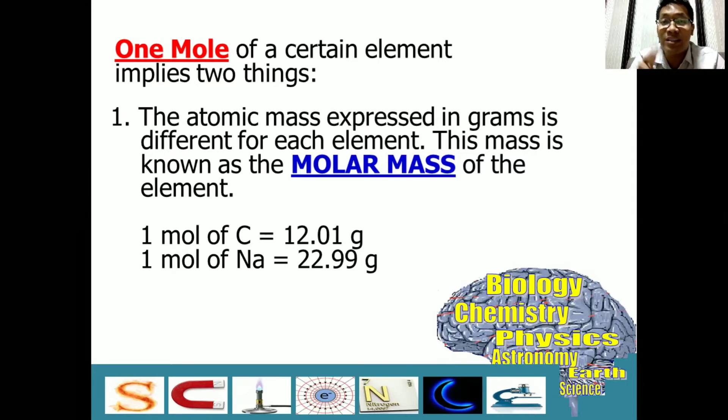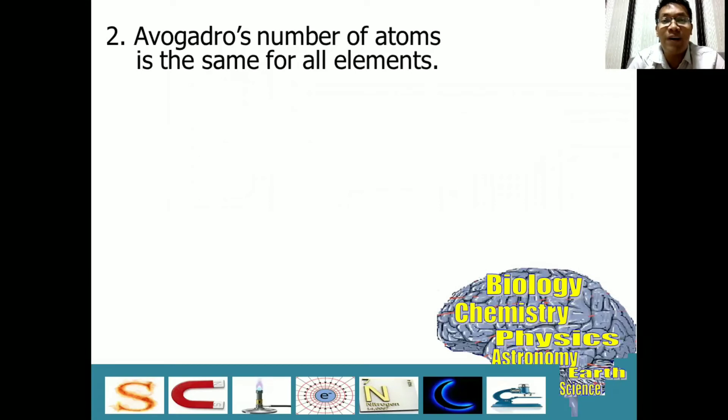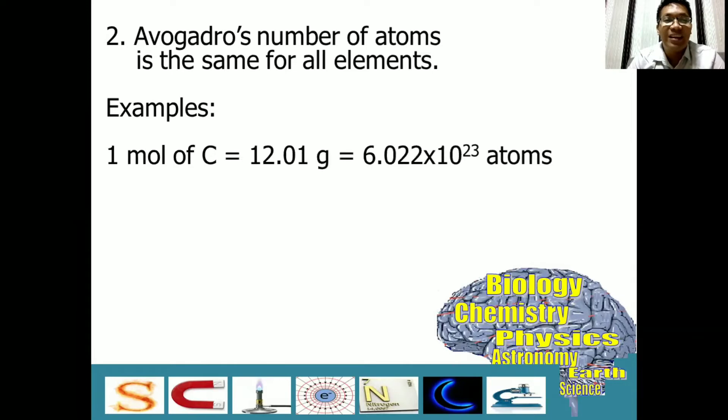The second implication is, Avogadro's number of atoms is the same for all elements. Remember that the same for all elements. For example, one mole of carbon, which is equal to 12.01 grams, which we learned earlier, is also equal to 6.022 times 10 raised to 23rd power. And this is always constant for every mole of carbon.